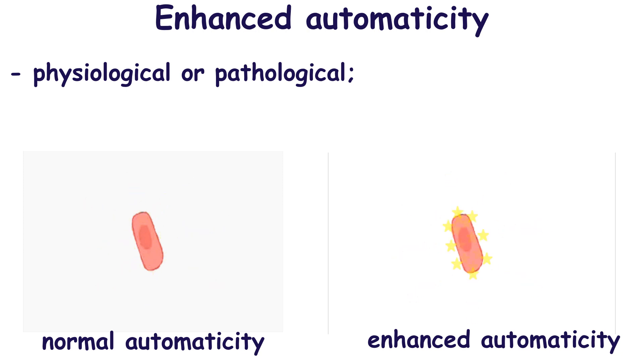For example, the sinoatrial node can produce more than 100 beats per minute upon physical exertions or upon emotional stress. Stimulation of the sympathetic nervous system in the case of infectious diseases or hypovolemia results in the increased automaticity of the sinoatrial node that occurs in the case of sinus tachycardia.